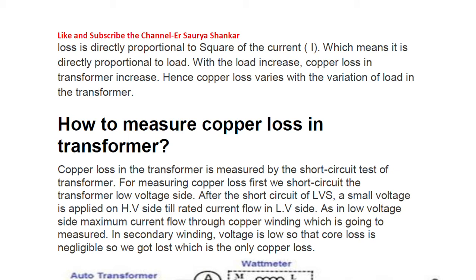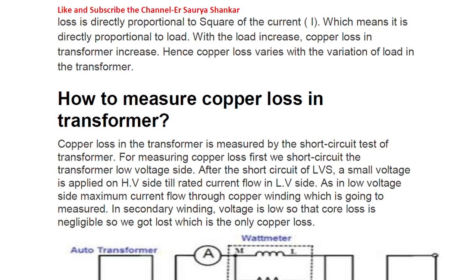A press or refrigerator draws more current, so the losses will also be more compared to a charger. As the load increases, copper loss in the transformer increases. Hence, copper loss varies with the variation of load in the transformer — as you increase the load on the transformer, the copper loss will also increase.